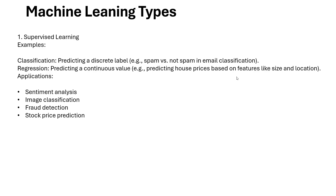In supervised learning we have two main algorithm categories: classification techniques and regression techniques. Classification predicts discrete labeled outputs, like spam or not spam. Regression predicts continuous values, like predicting house prices based on features such as size and location.